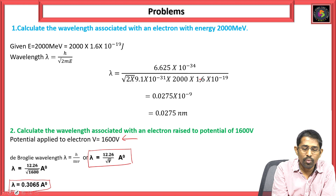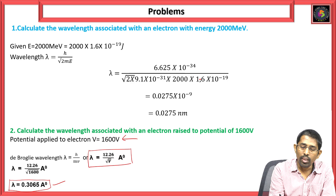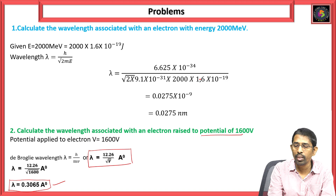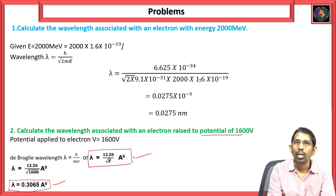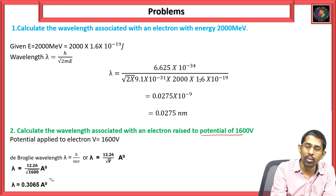After substituting the value and simplifying, we get the lambda value — the wavelength associated with the electron. If the potential energy is given, we use the de Broglie wavelength equation lambda = 12.26 / √V, which is in terms of angstroms. This is the second problem.